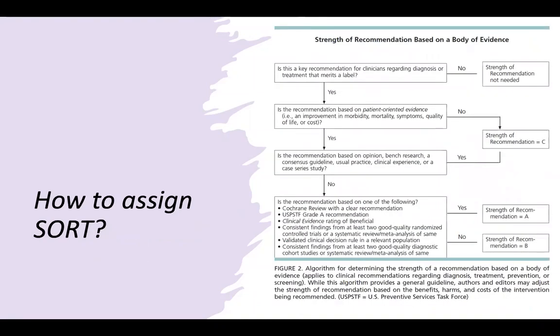Now, how do you assign it? It's a pretty complicated diagram here, but to break it down and make it very easy: you look at what key recommendations the paper is trying to make or what a clinician is trying to say. You look at an algorithm here. Basically, if it doesn't have key recommendations, then maybe we don't need to even bother with giving it a recommendation level. But if it does, then the next step is to know: is the recommendation based on patient-oriented evidence, such as improvements in morbidity, mortality, quality of life, or cost? Those are some of the things to consider. If not, then you can automatically assign a level C.